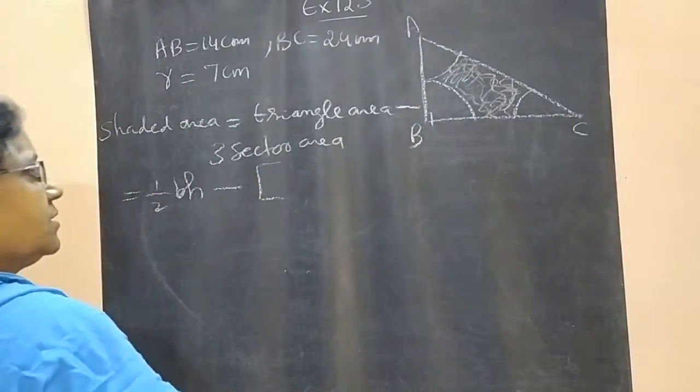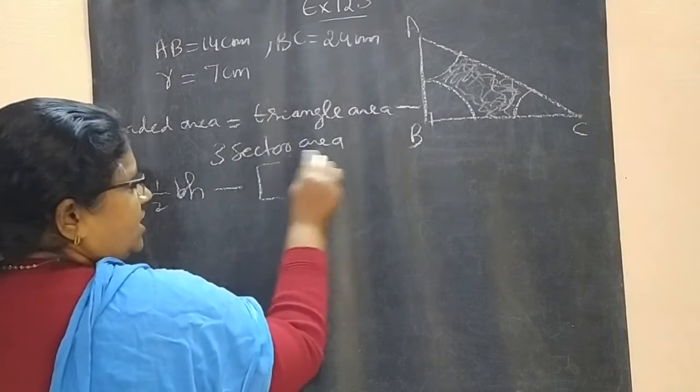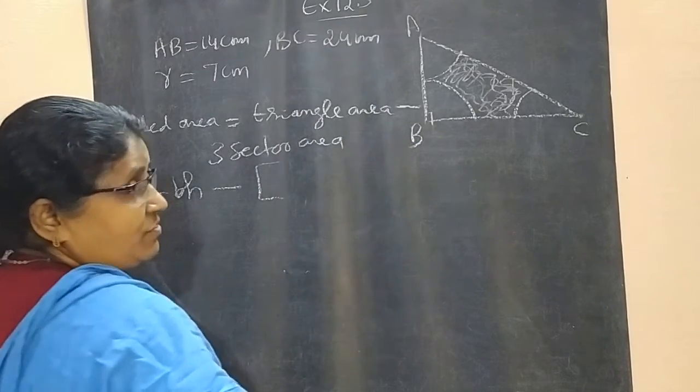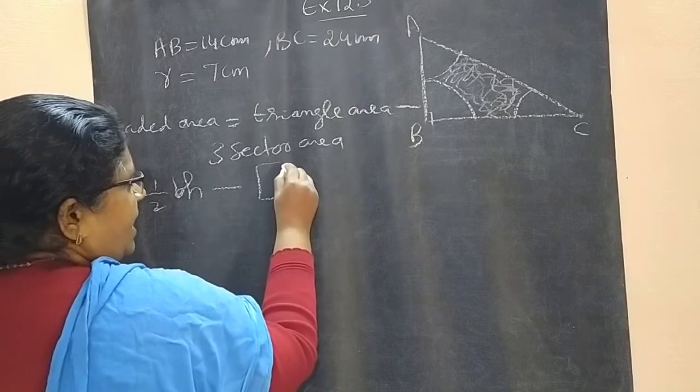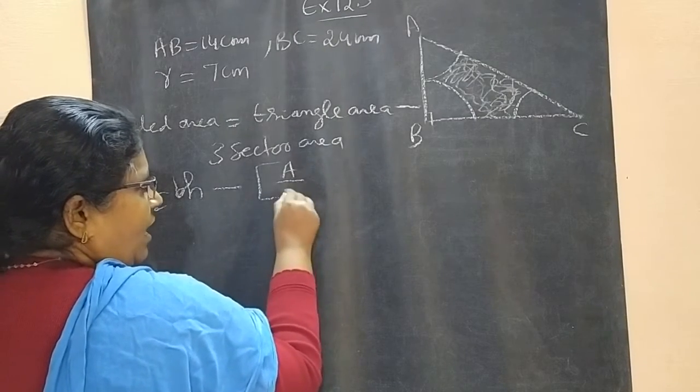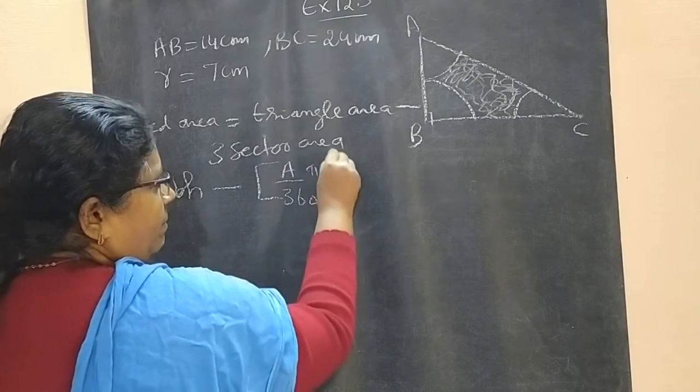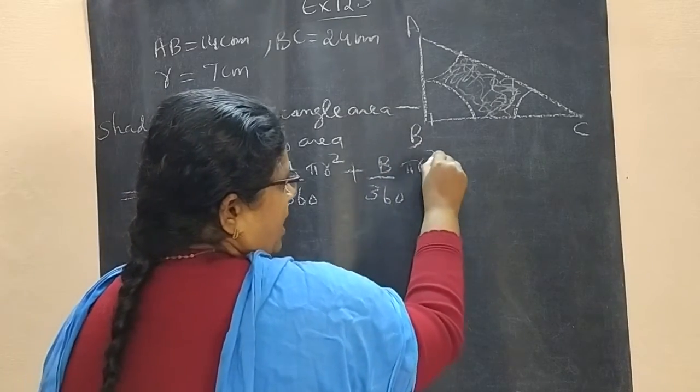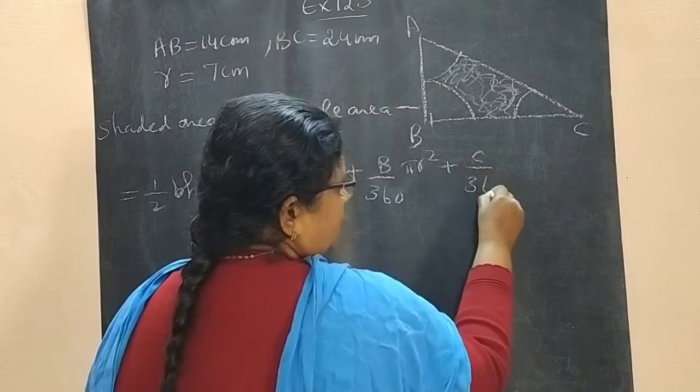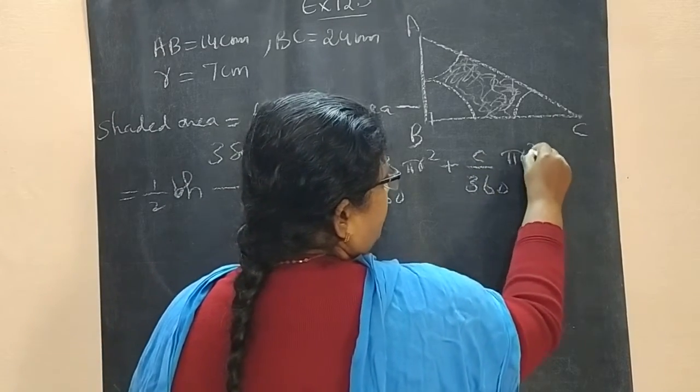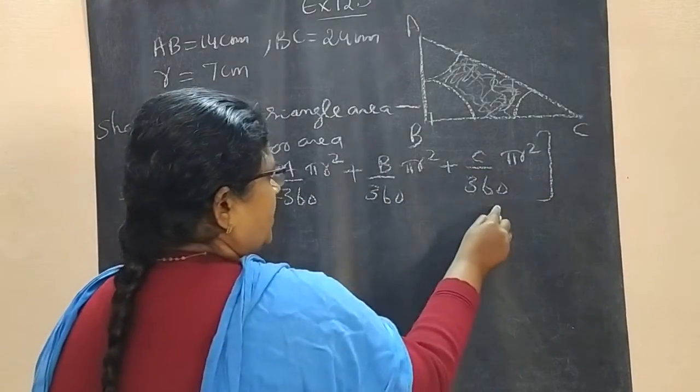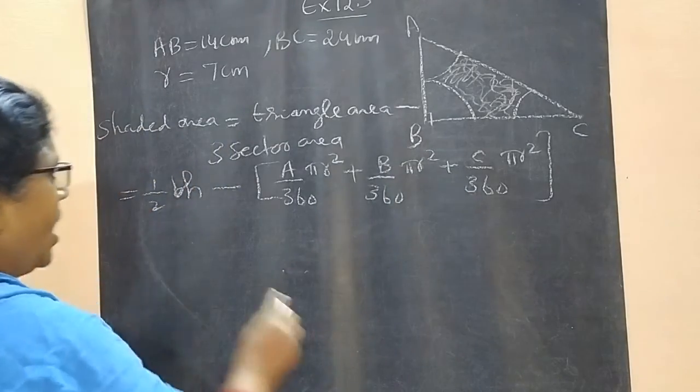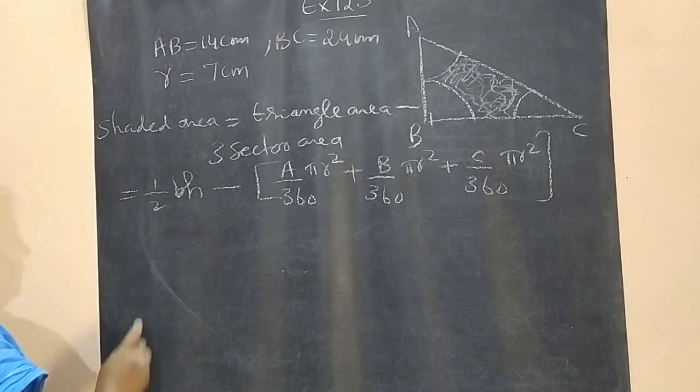But I am taking 3 sector sizes different. So, we can write A by 360 pi r square plus B by 360 pi r square plus C by 360 pi r square. These three sectors area, you have to remove from this.